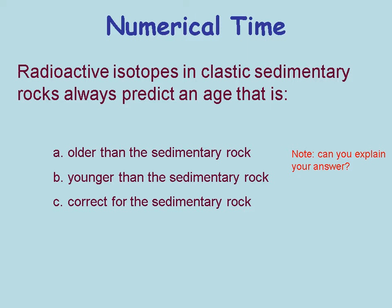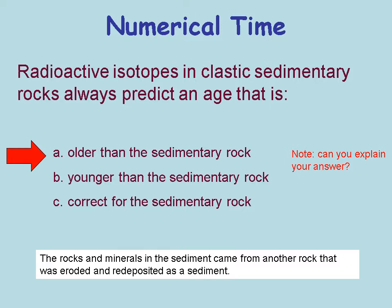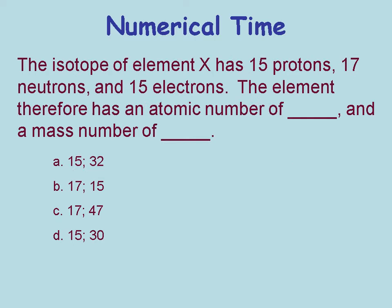Radioactive isotopes in classic sedimentary rocks always predict an age that is older than the sedimentary rock itself, because the pieces of the sedimentary rock came from another, older rock. If radioactive decay began with 400,000 parent isotopes, after three half-lives you'd have: first half-life — 200,000; second — 100,000; third — 50,000 remaining. If a radioactive isotope has a half-life of 500 million years and a rock sample contains three times as many daughter atoms as parent atoms, we can use the decay table to determine the age.